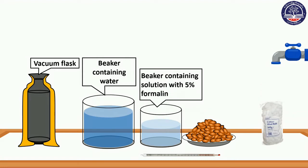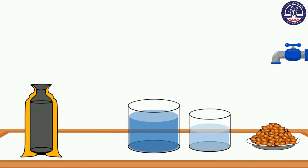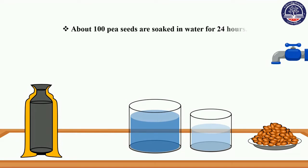We can contain a solution with 5% formalin. Formalin is a solution. We can see 100 pieces of seeds. They are using cotton wool. About 100 peat seeds are soaked in water for 24 hours.